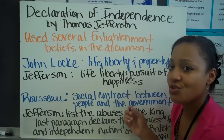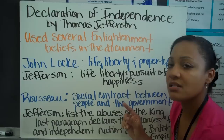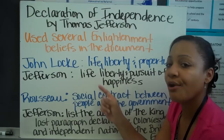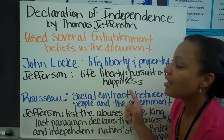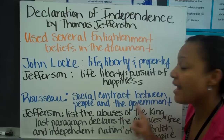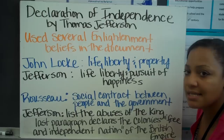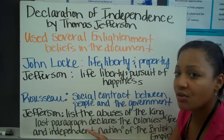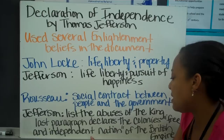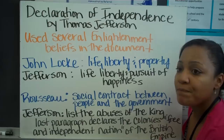One important thing about this document is that it does not address the issue of slavery. It did at first, but the founding fathers told Jefferson to remove it because they were going to continue slavery — he had originally blamed slavery on the king. So life, liberty, and the pursuit of happiness did not apply to slaves. Jefferson also incorporated Rousseau's idea of the social contract, listing the abuses of King George in the document. The final paragraph declares the colonies free and independent states, no longer part of the British Empire.